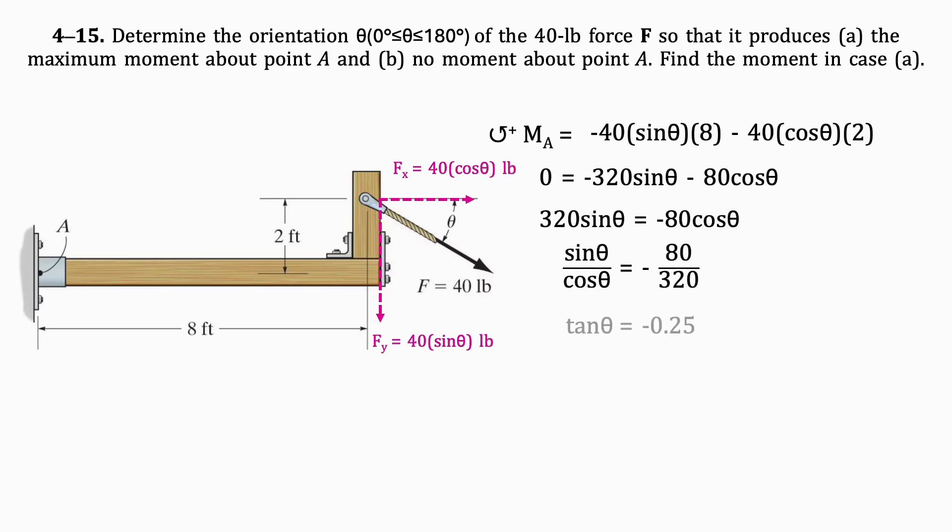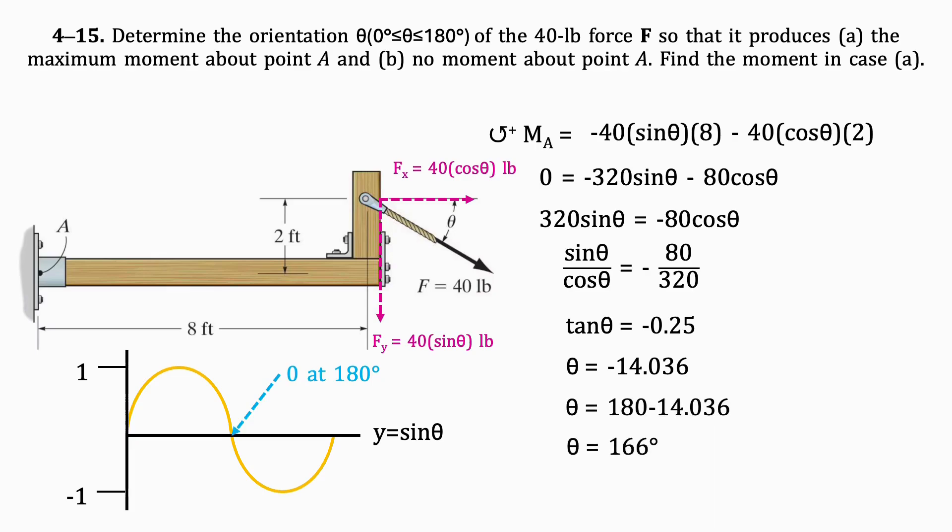Again, we get that theta is 14 degrees. This time, though, we're looking for the angle that generates no moment. Let's take a step back and remember that the formula to find a moment is F times D times sine theta. Sine is 0 at 180 degrees, so we will subtract the angle we found from 180. This gives us 166 degrees, which is our final answer.